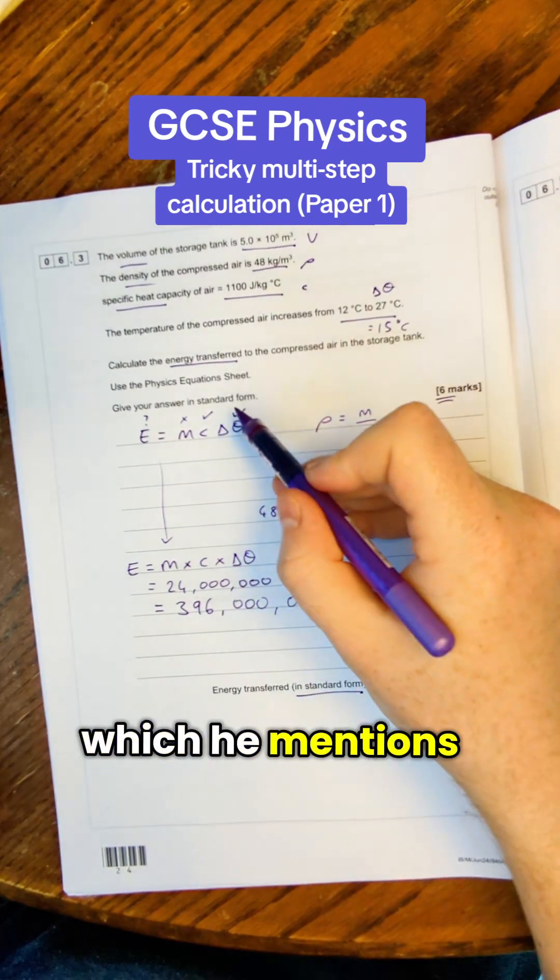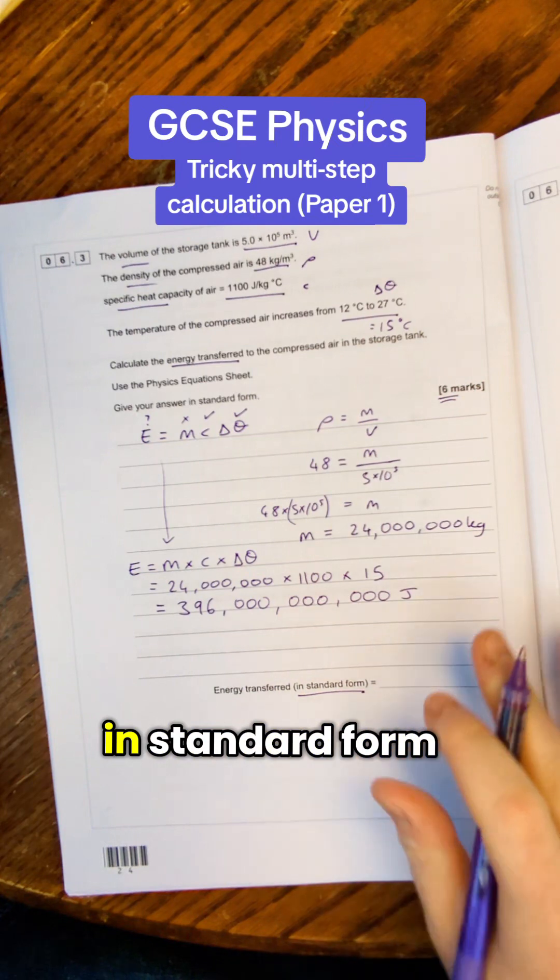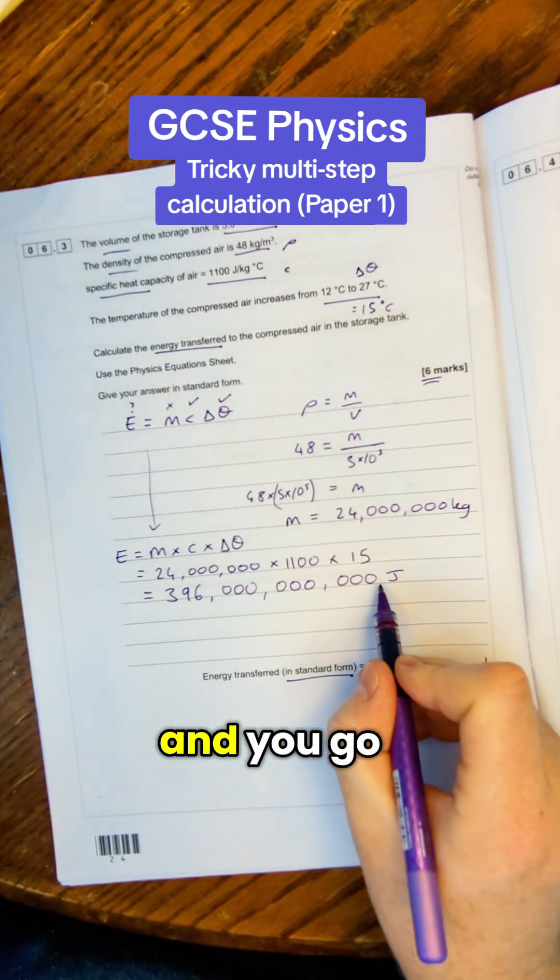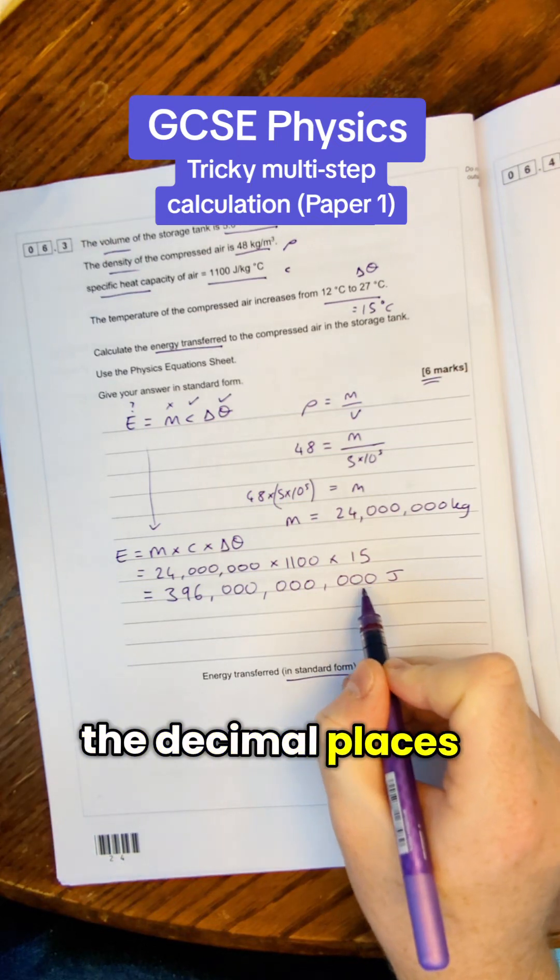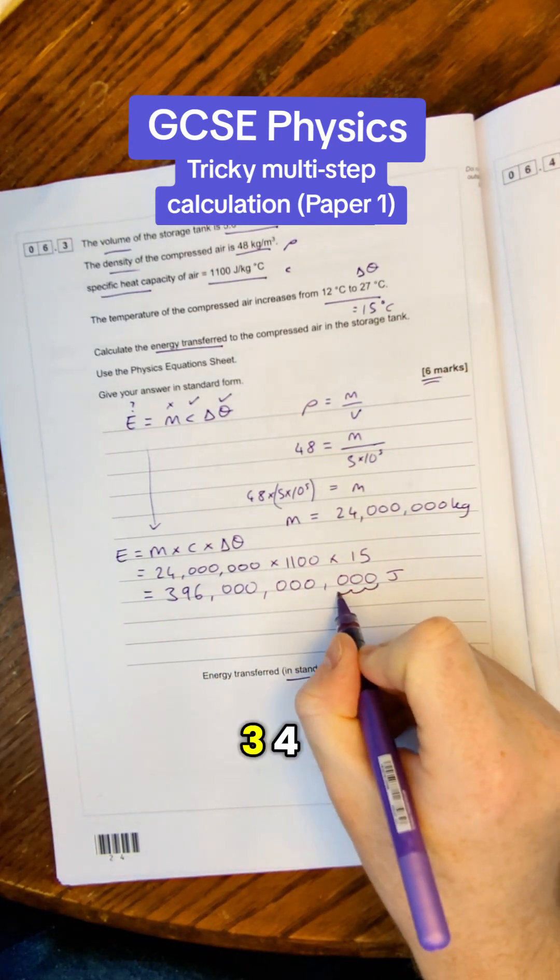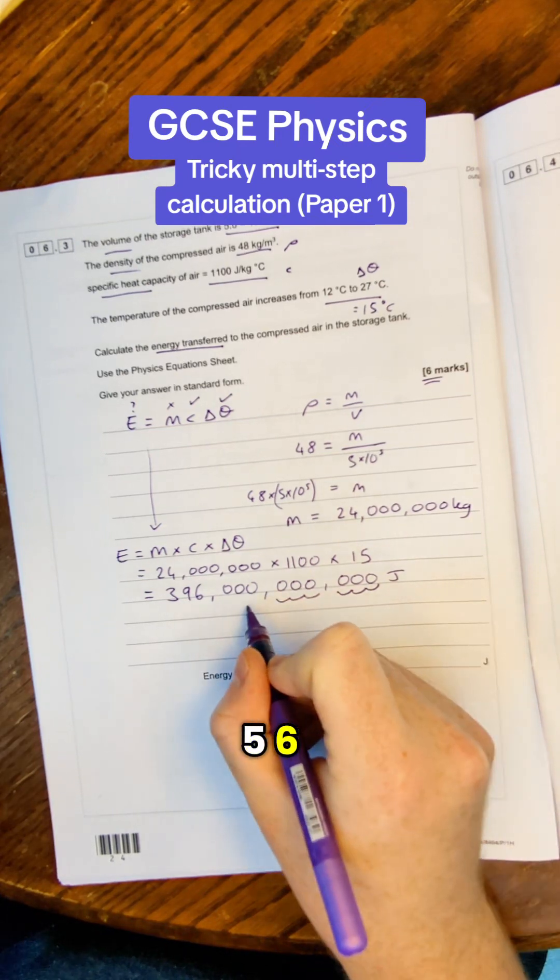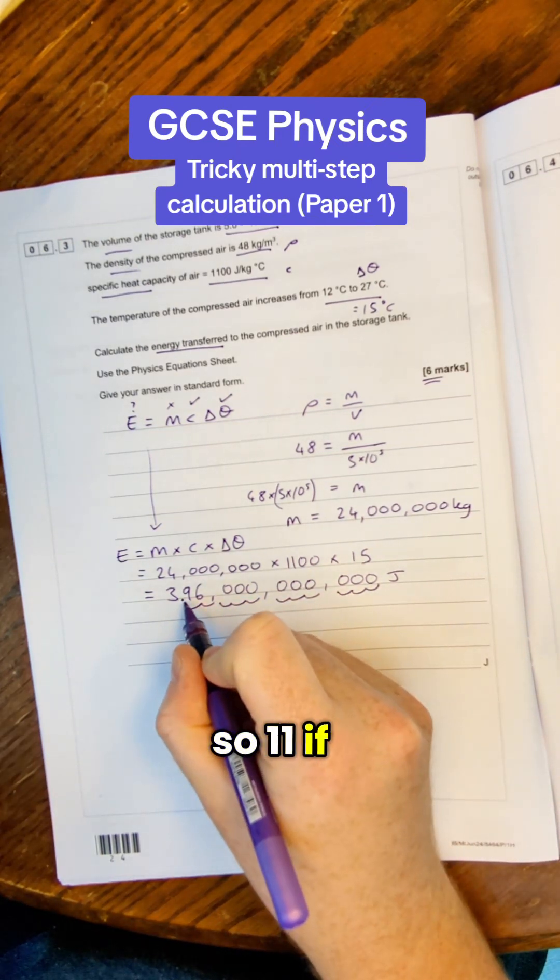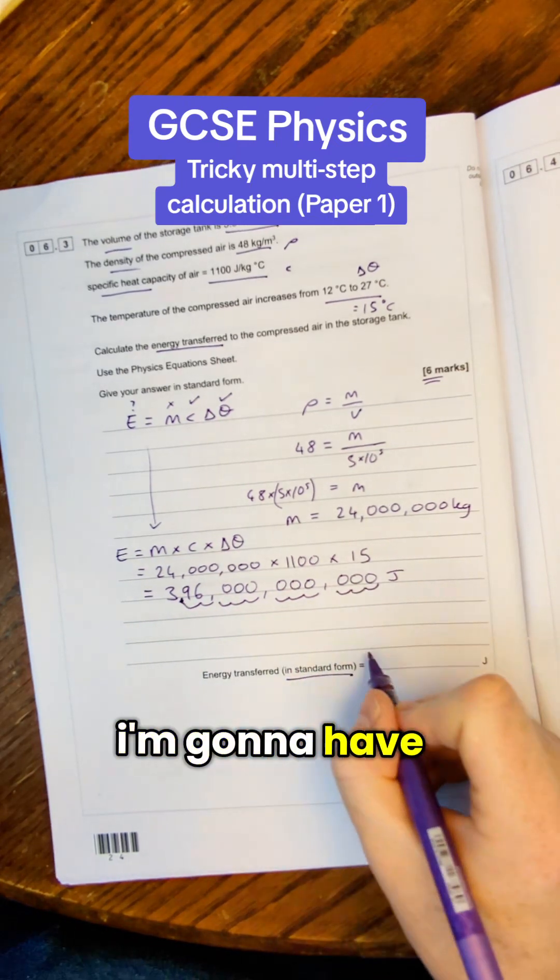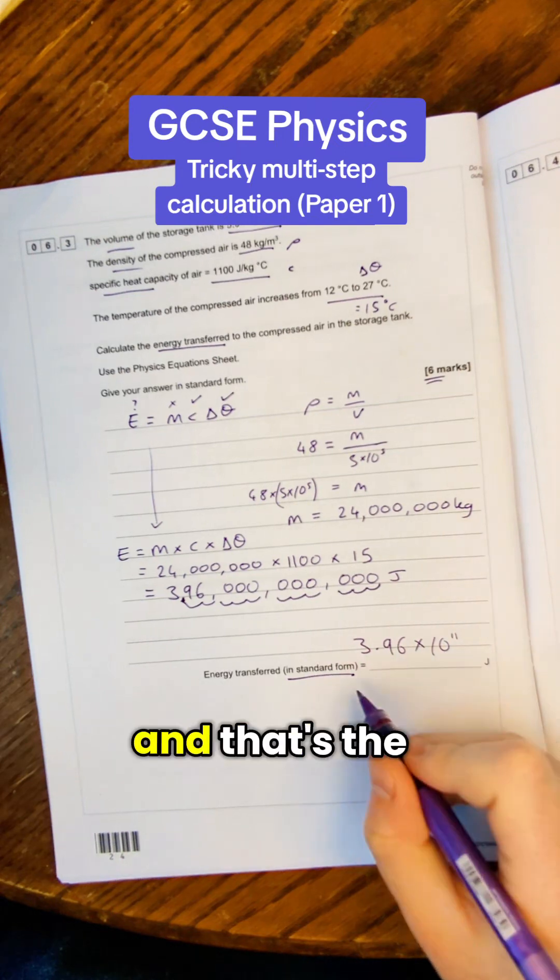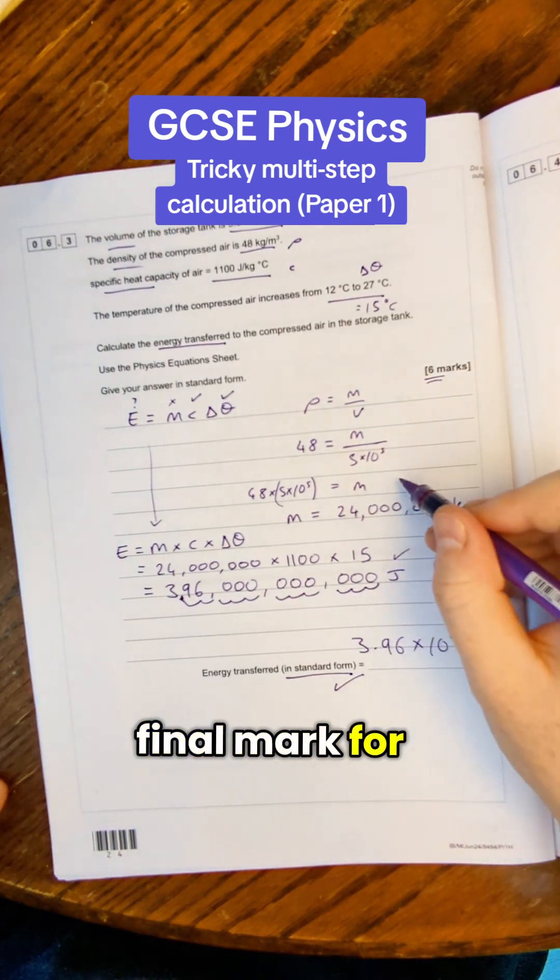Now the final mark in this question which it mentions twice is to give our answer in standard form. To put it in standard form sometimes your calculator will do it for you. You count the decimal places from the end until you get to a number between 1 and 10. Counting gives us 11 decimal places. So if I put my decimal point there I'm going to have 3.96 times 10 to the power of 11 and that's the final mark for this question.